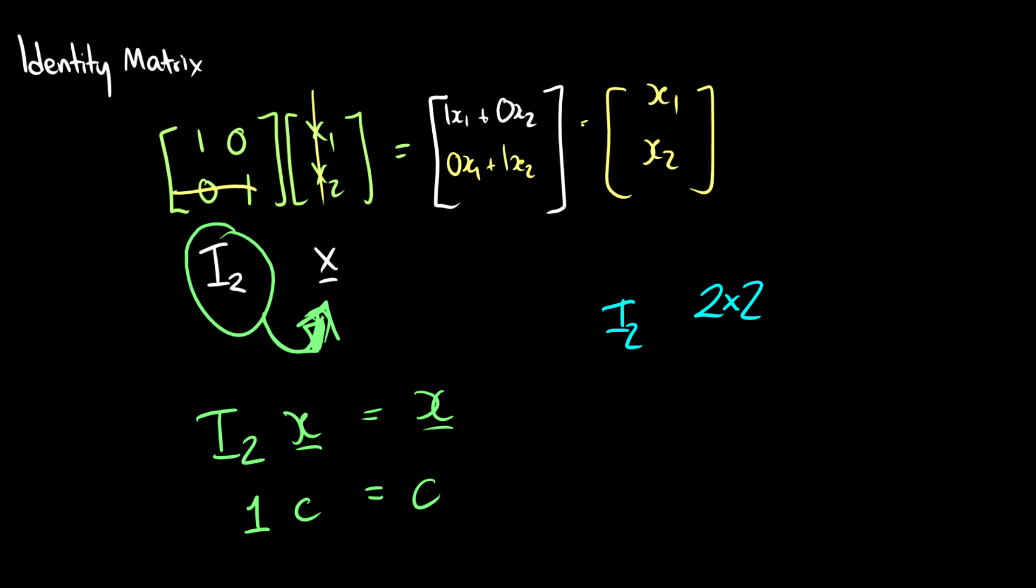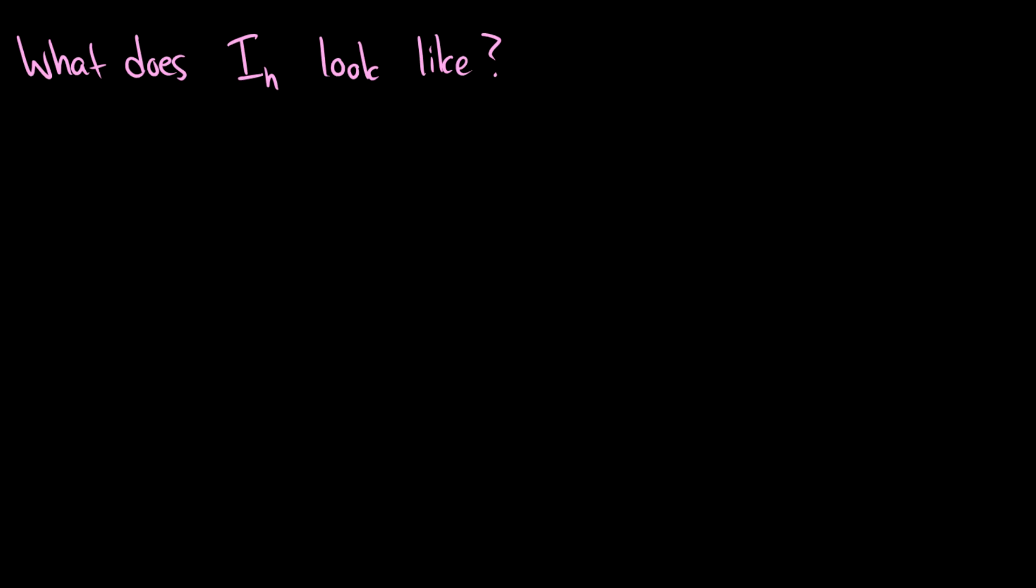Here's the question: what does IN look like for whatever dimension we need? IN is going to be an n by n matrix. Here's how you can construct an identity matrix that is n by n. You put a one in the top left and you fill the rest of the row with zeros.